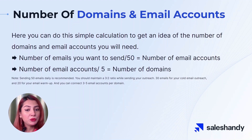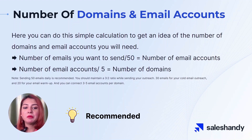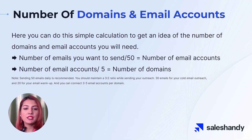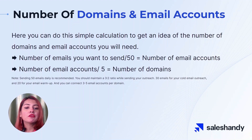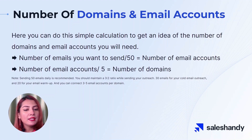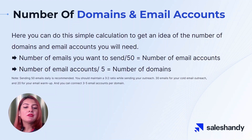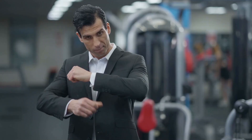Here are a few things to keep in mind. First, it is recommended to send 50 emails per email account per day for higher deliverability. Second, it is good practice to maintain a 3-to-2 ratio: 30 emails for cold outreach and 20 emails for email warmup. Email warmup is an important deliverability factor we will discuss in lesson three. Third, by following this practice, replies from each outreach convey to your ESPs that you are an authentic sender and not a spammer. Finally, you can connect three to five email accounts per domain to keep your domain's reputation up.